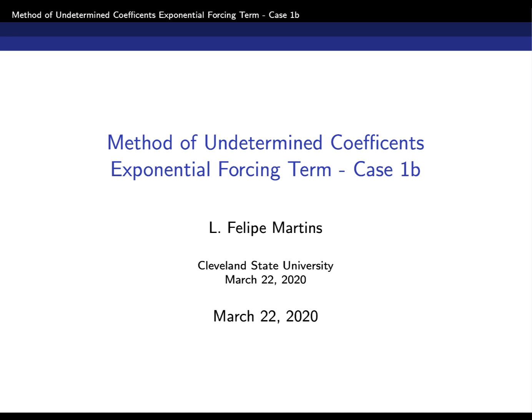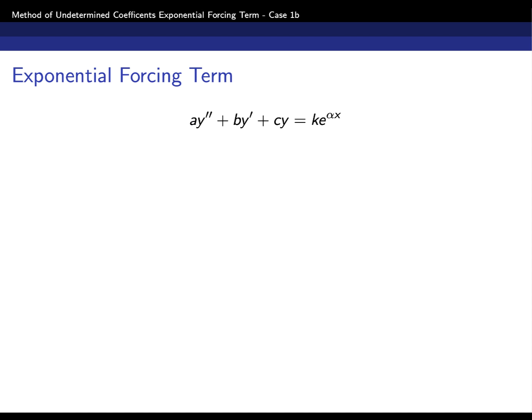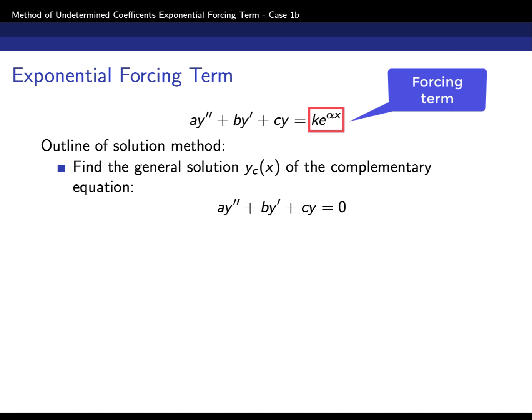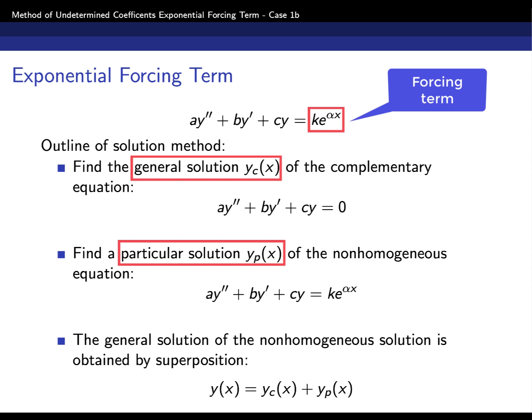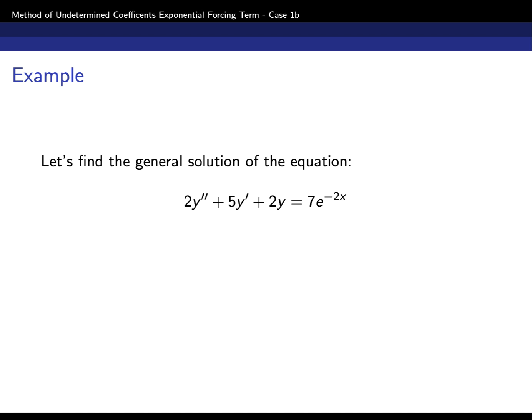Hello, this is a presentation on case 1b of the method of undetermined coefficients. We are trying to solve a non-homogeneous differential equation with an exponential forcing term k·e^(αx). The standard solution method is to first find the general solution of the complementary equation, then find a particular solution of the non-homogeneous equation. Using the principle of superposition, you add the complementary and particular solutions to get the general solution of the non-homogeneous equation.